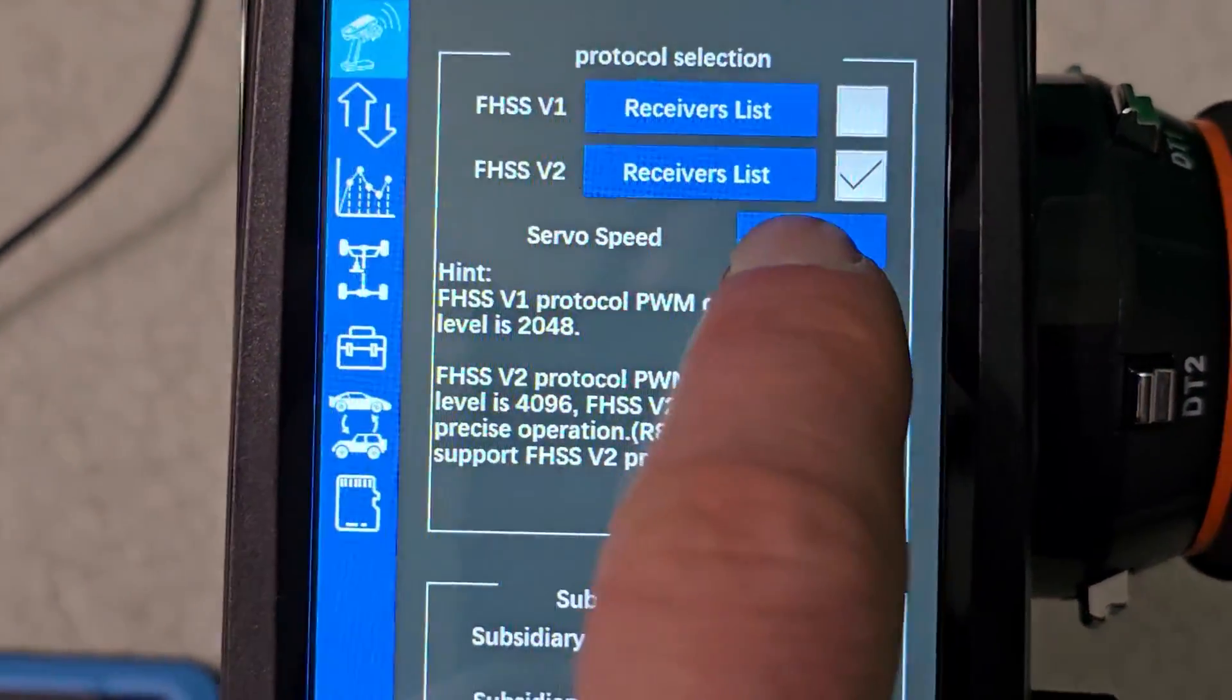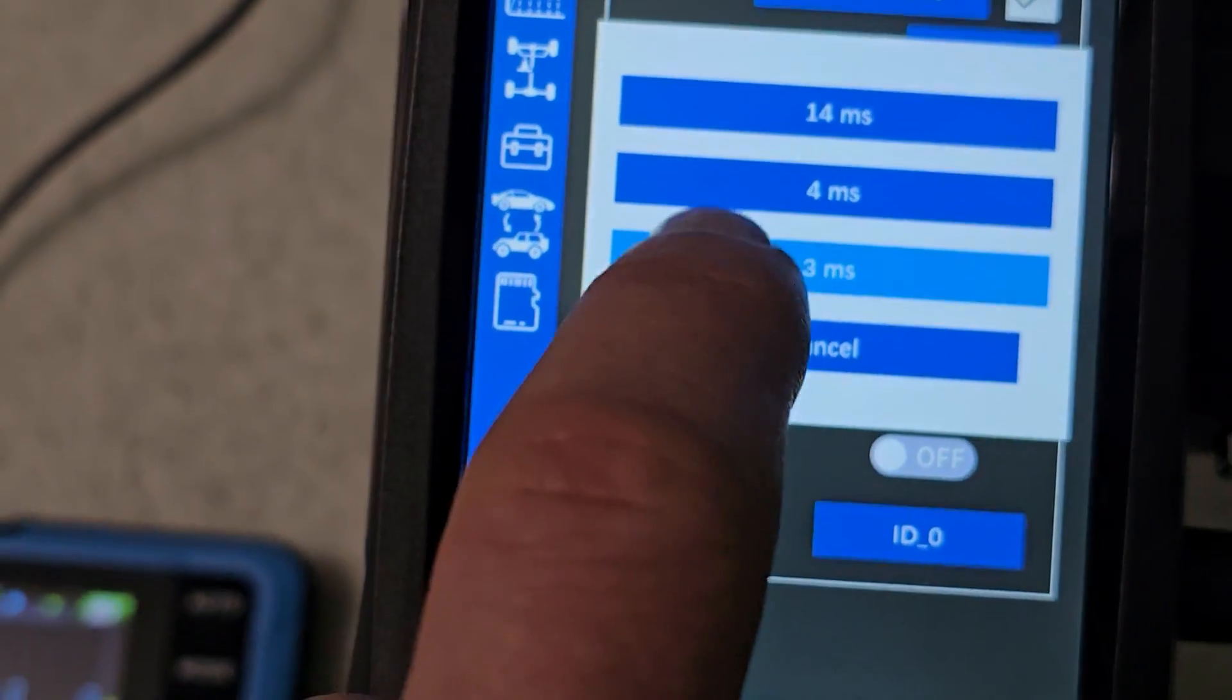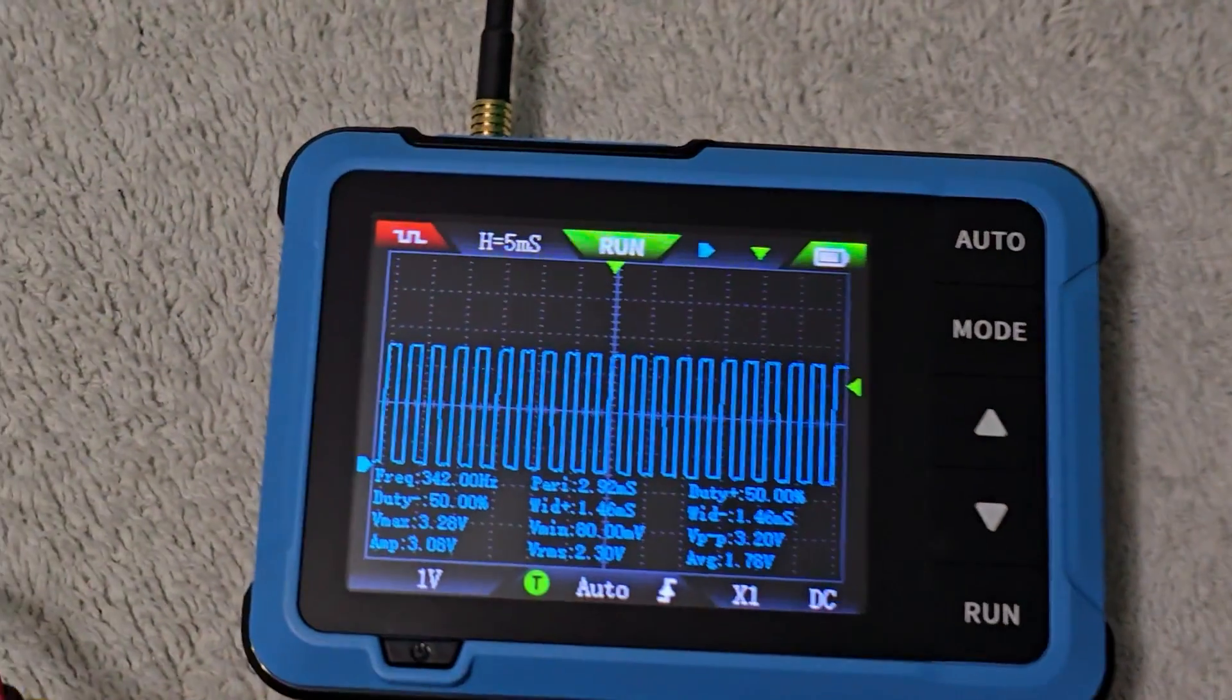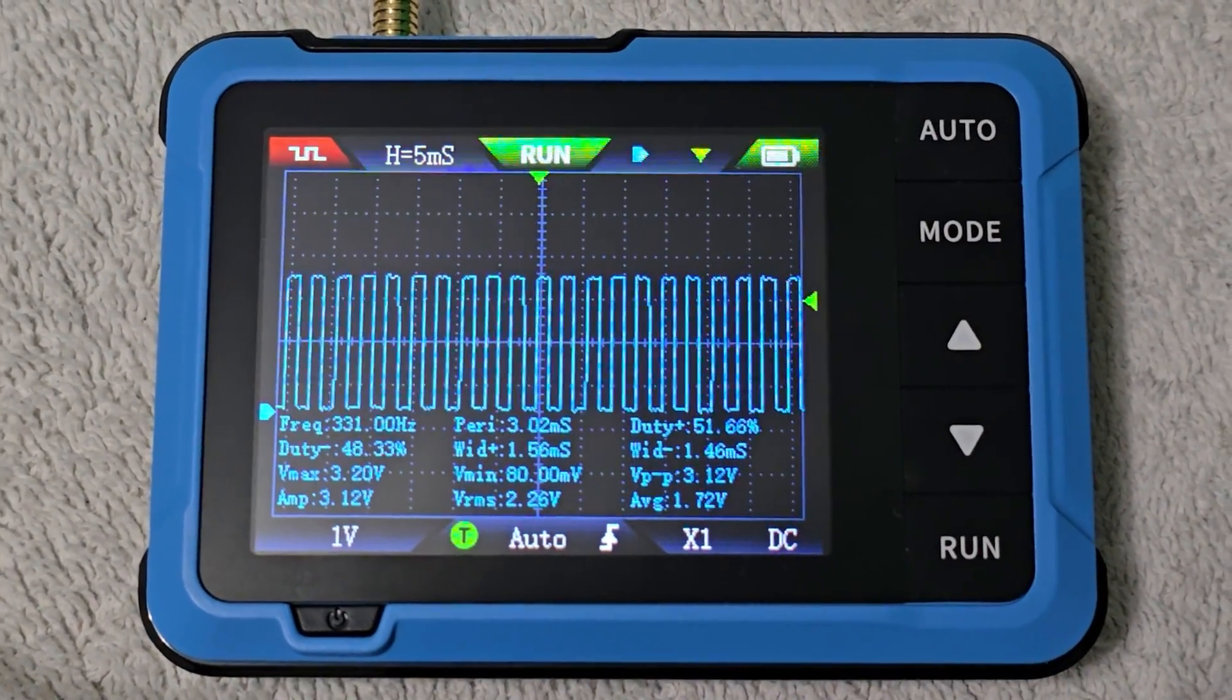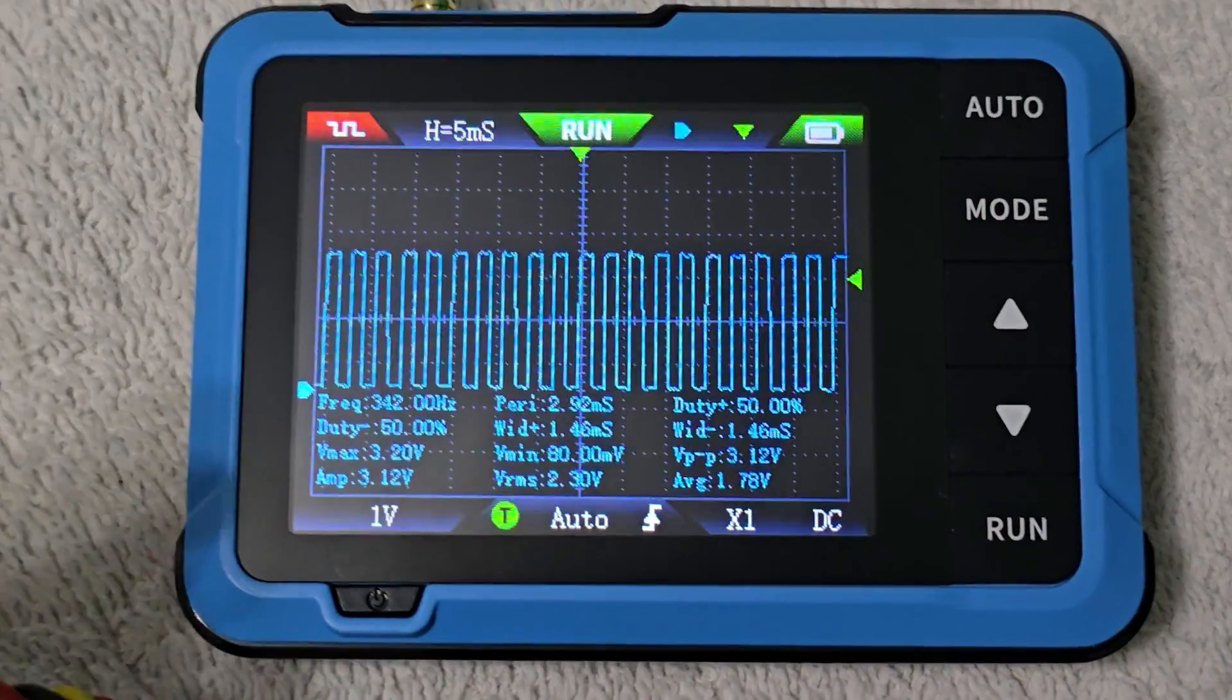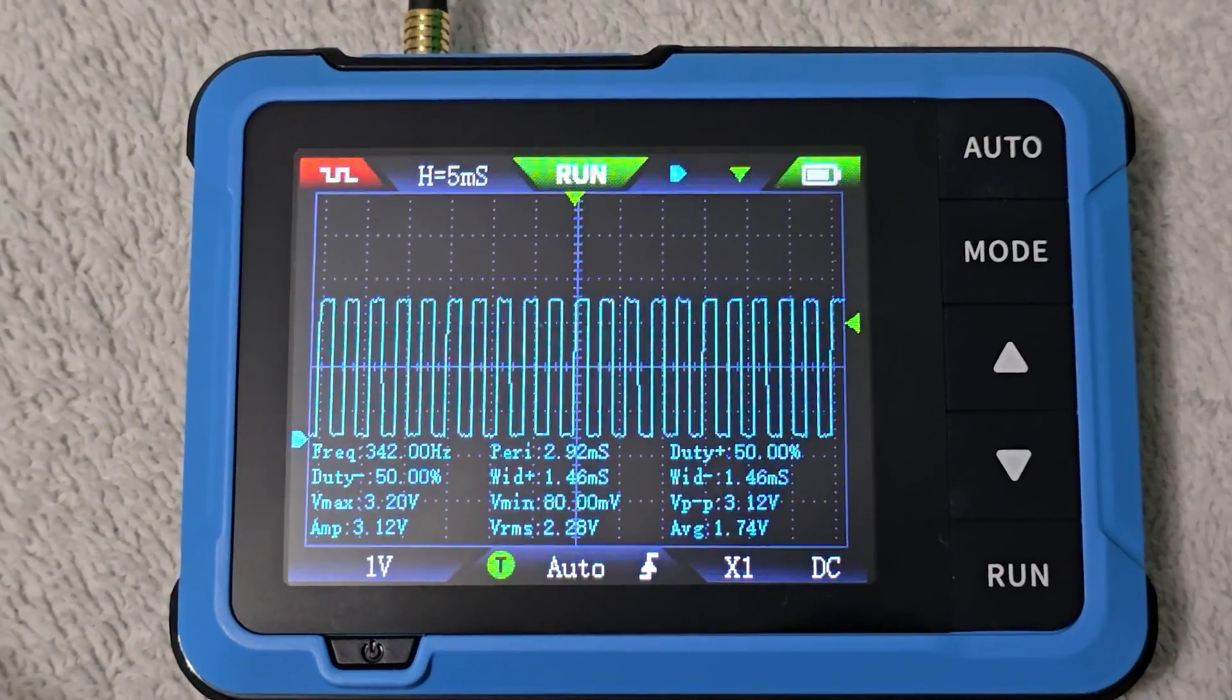Our servo speed is 14 milliseconds. Let's change that to 3. As soon as we fire that off, you can see it has updated—now it shows a frequency of 340 hertz, displayed on this side, and the period is close to that 3-millisecond point.